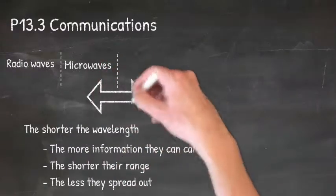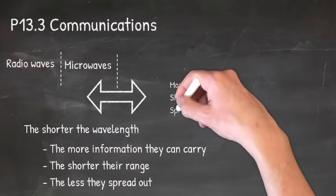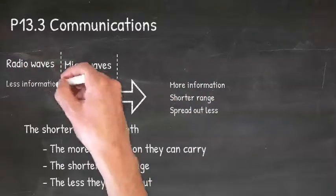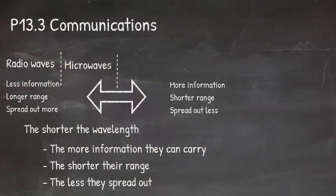This means that microwaves carry more information for a shorter range and spread out less than radio waves, whereas radio waves carry less information, have a longer range, and spread out more.